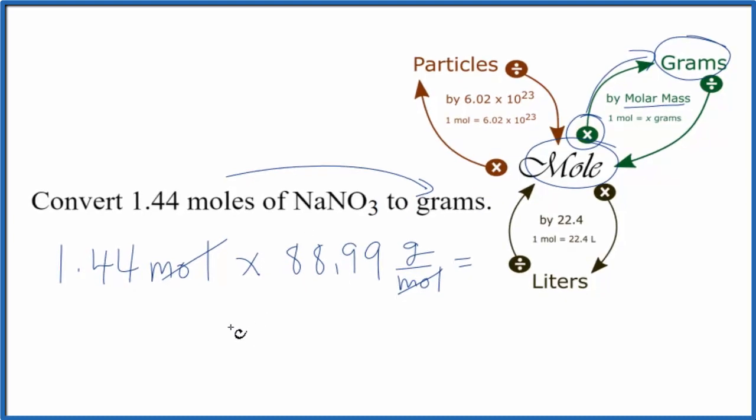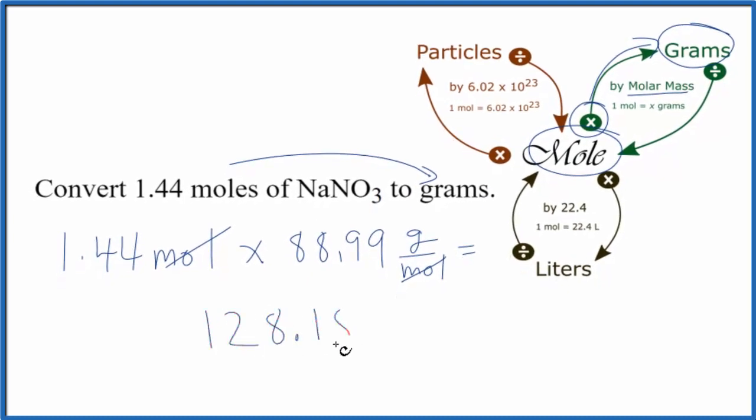So we multiply these numbers together and get 128.15 grams. If you had grams and wanted to get to moles, you just do the reverse. Instead of multiplication, you divide by the molar mass.